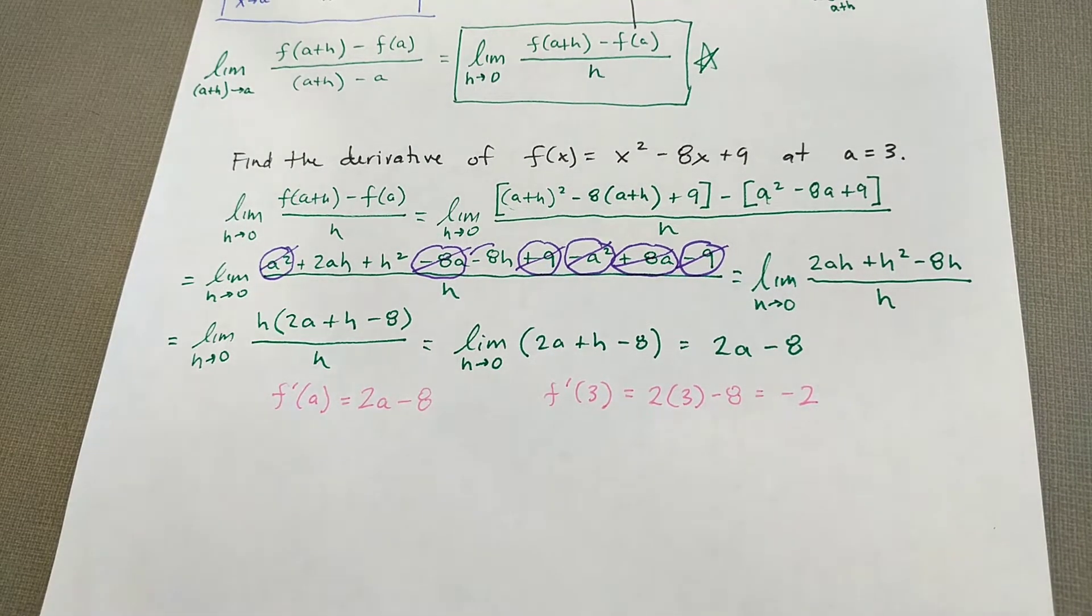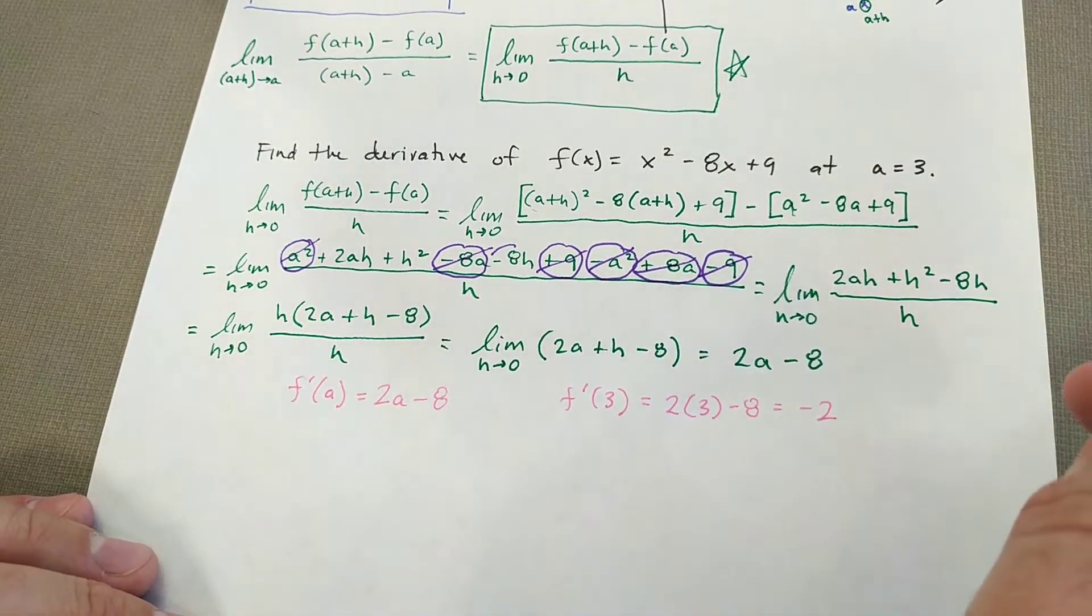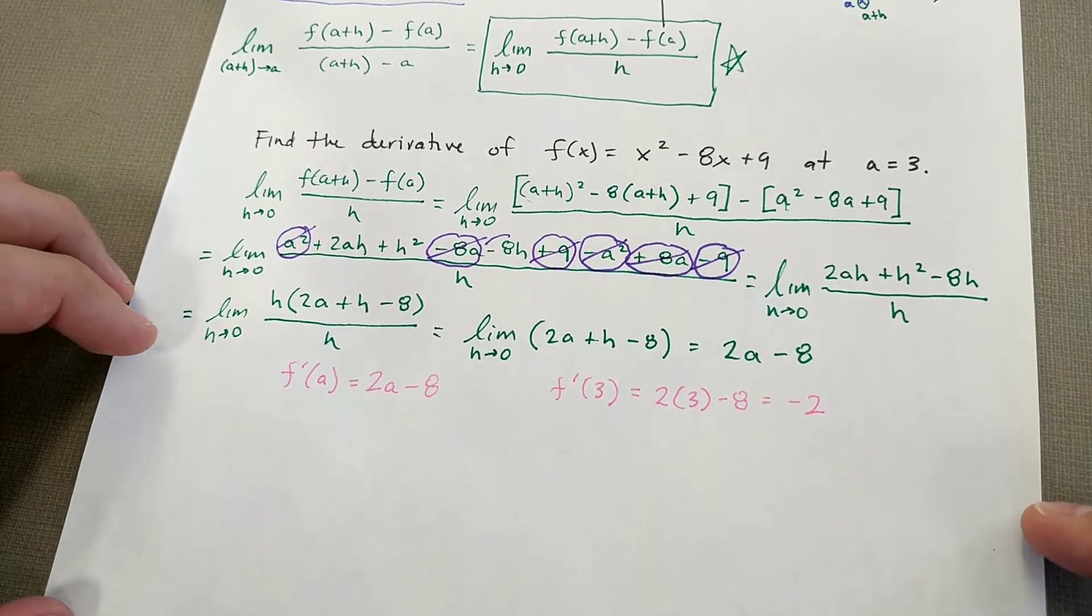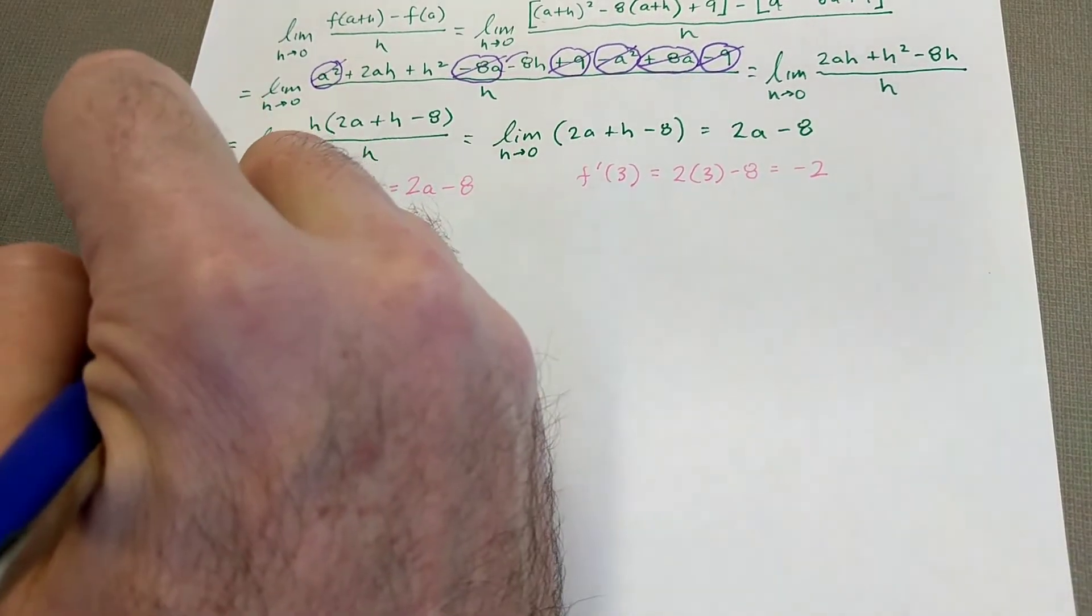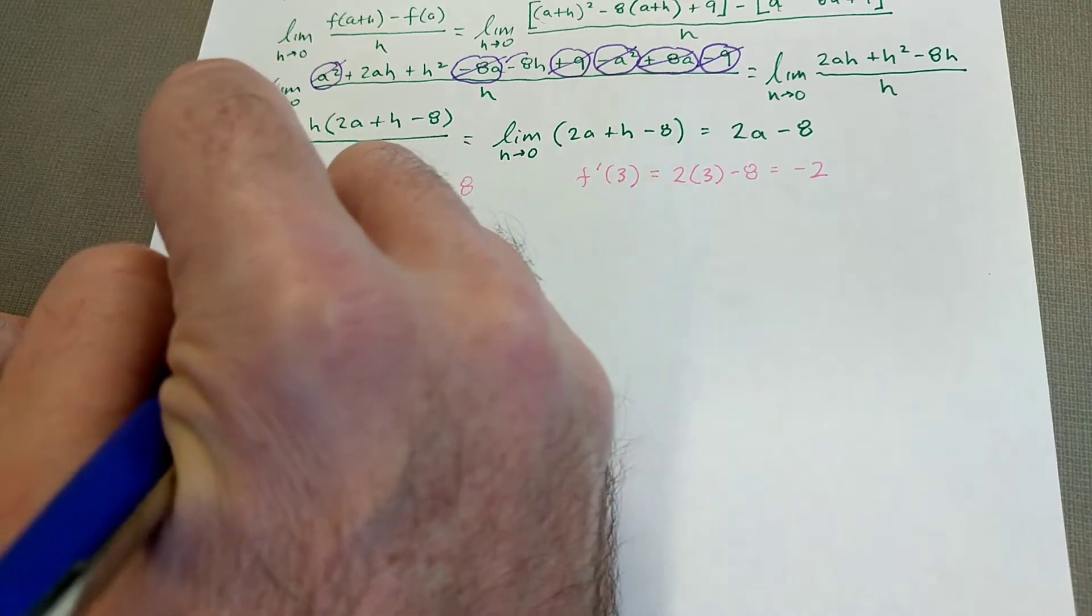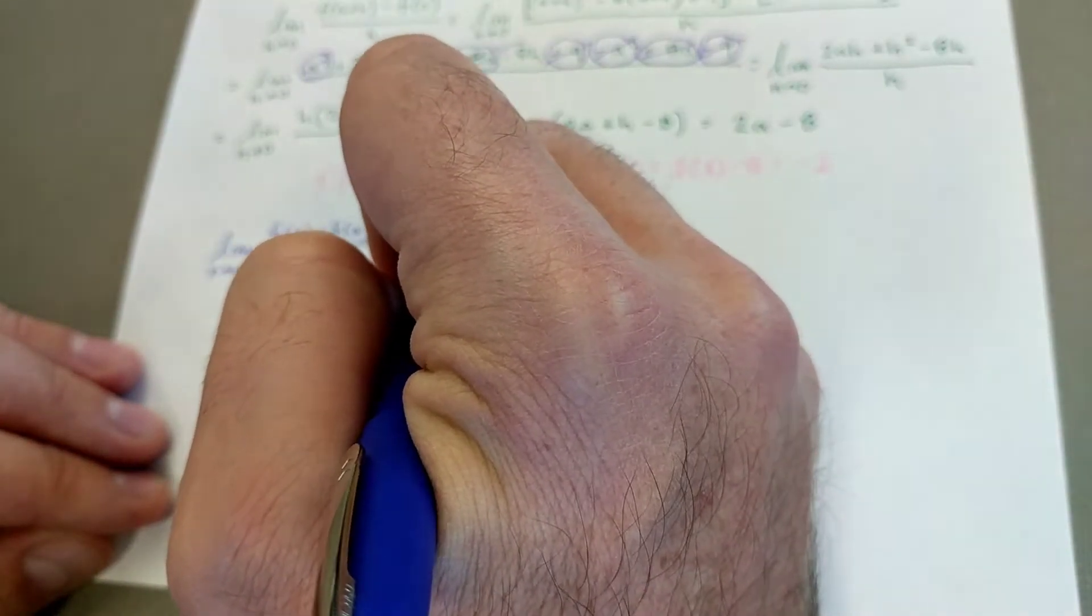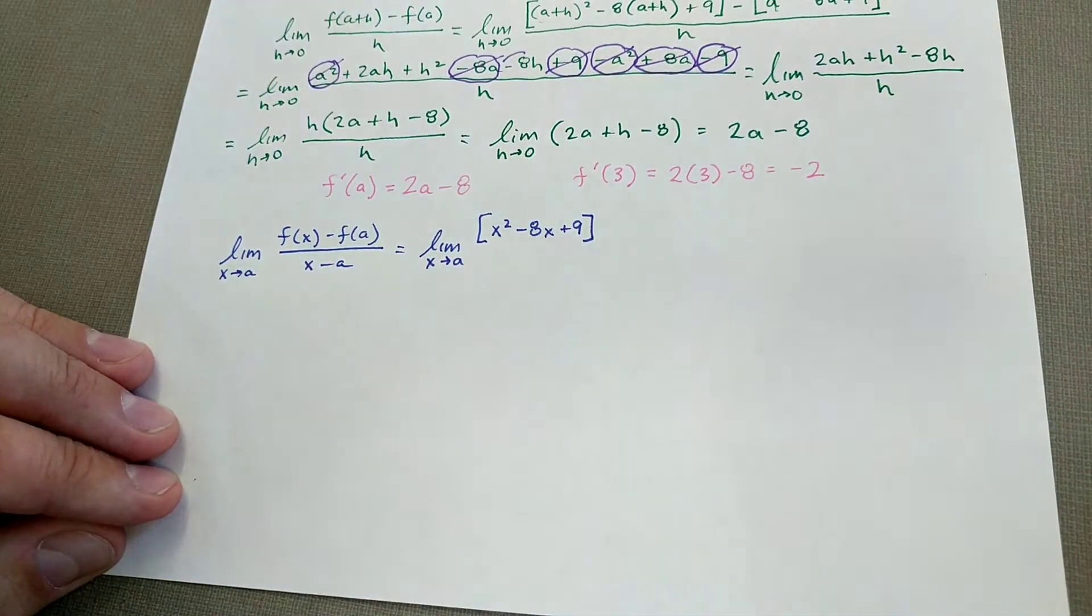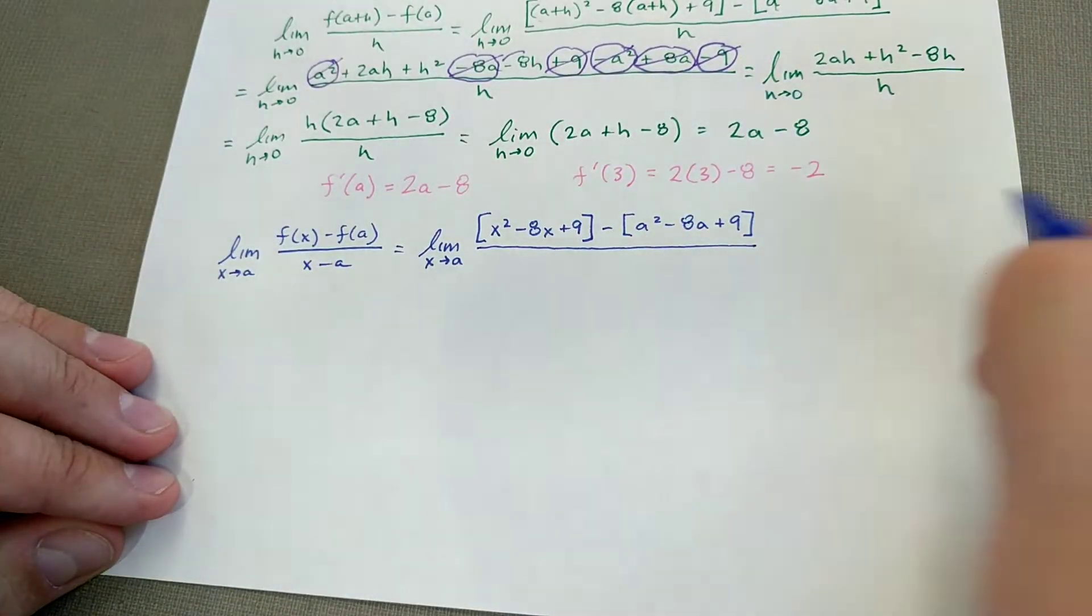Let's now do it again, except for we're going to use the other formula. And you'll sort of see a different noticing. So in this one, the noticing hopefully is a little more obvious, like the things that will add together to 0, the factoring out of an H. The other one, you have to sort of notice and group a little bit differently in order to make sure it works out. So we're going to do the exact same problem, except for I'm going to use the first formula I wrote down, which is the limit as X approaches A of F of X minus F of A all over X minus A. So let's go ahead and substitute in our function first. So F of X is X squared minus 8X plus 9. F of A is A squared minus 8A plus 9. And that is all over X minus A.